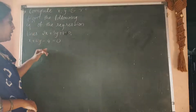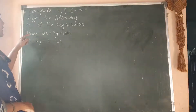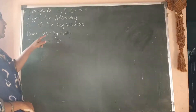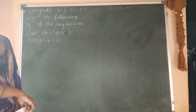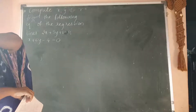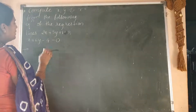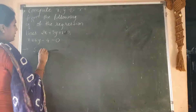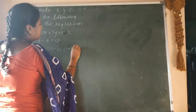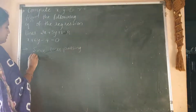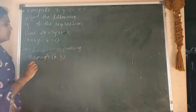With the help of x bar, y bar and r, we can find lines of regression. But here the lines of regression equations are given, and they are asking us to find x bar, y bar and r — that is, the means of x and y and the coefficient of correlation. Since lines of regression pass through x bar and y bar, let us start this part.